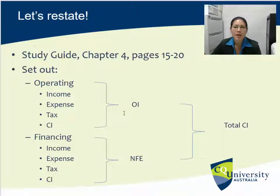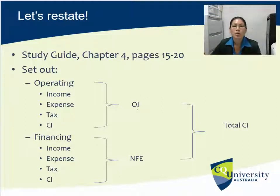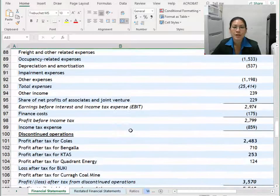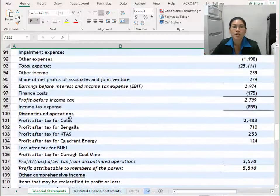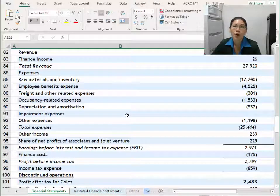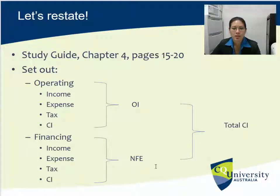Once we do each of these sections we do a little total for each and sum them, getting a total for the O section and a total for the F section — call this operating income and net financial expenses. We're not adding anything new; we're simply classifying all income statement items into O or F, rearranging them. So when we add both totals together it should still balance to the total we had originally — that's another check.